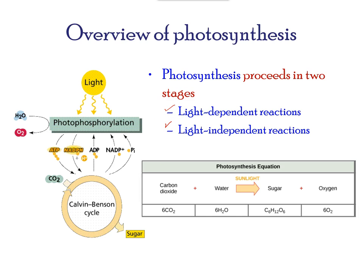The equation for photosynthesis indicates that carbon dioxide from the atmosphere and water are used to make a sugar molecule, with oxygen released as a byproduct.